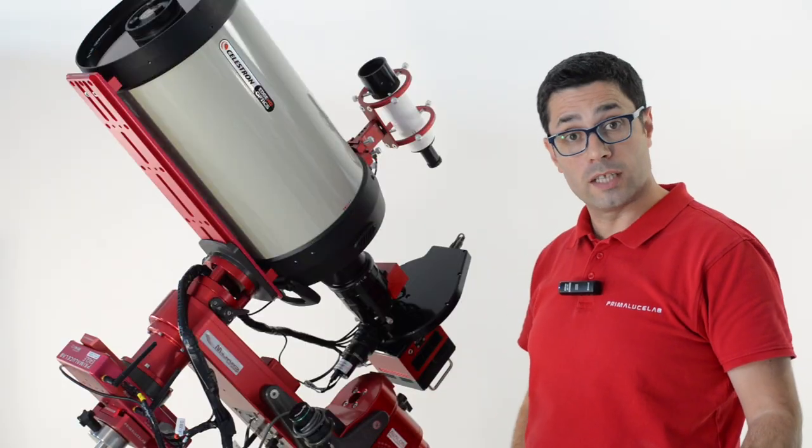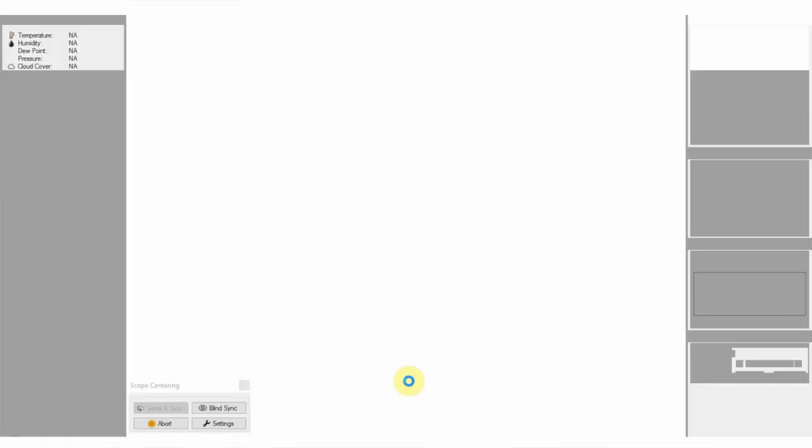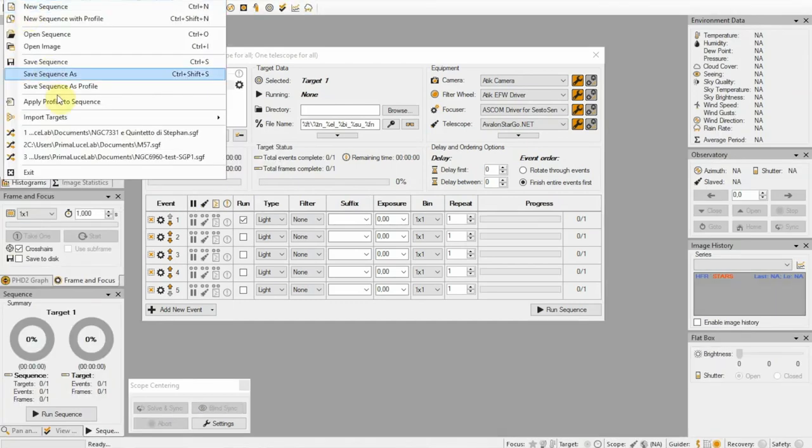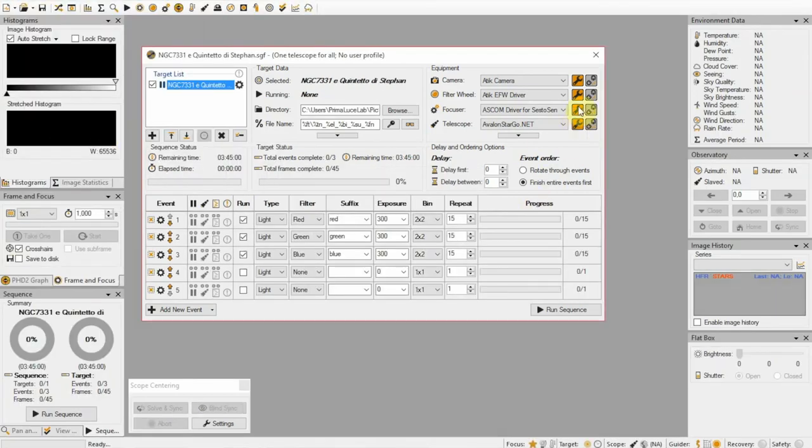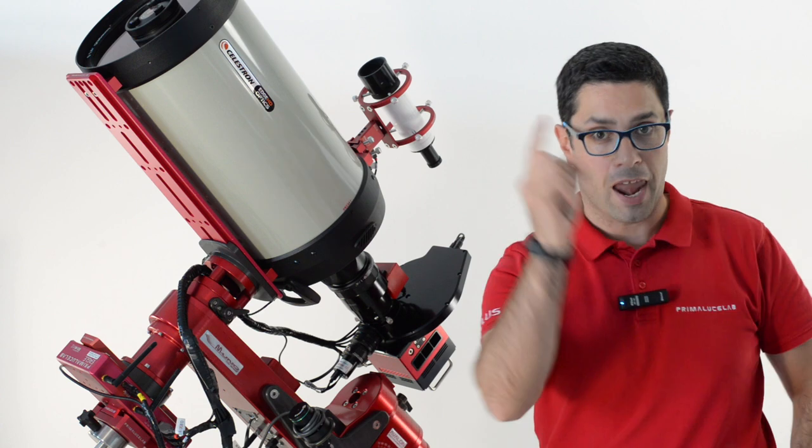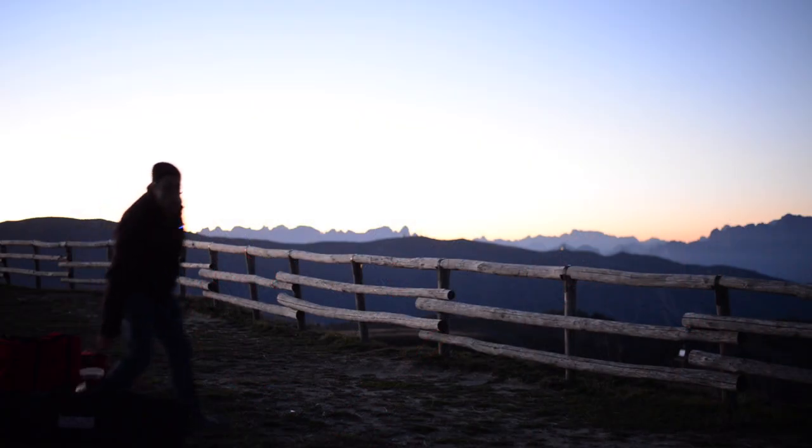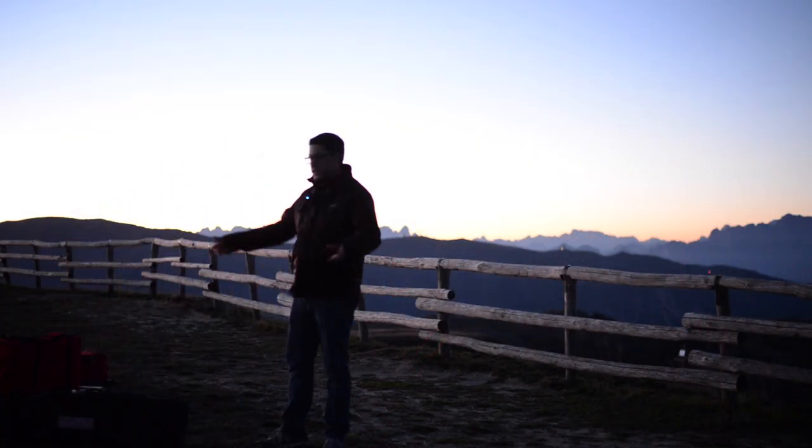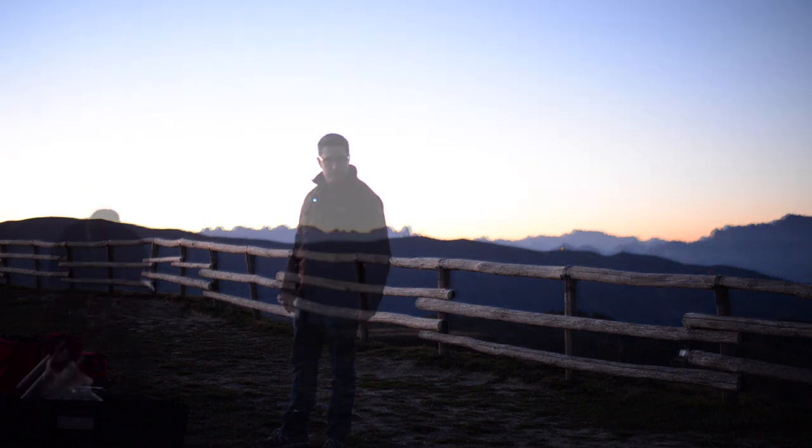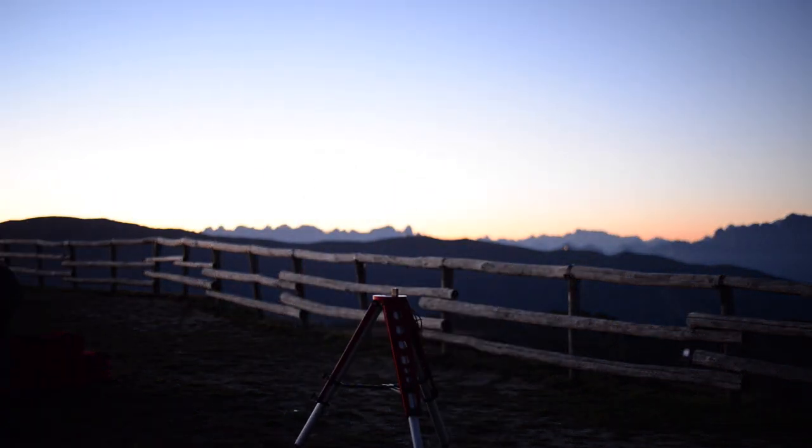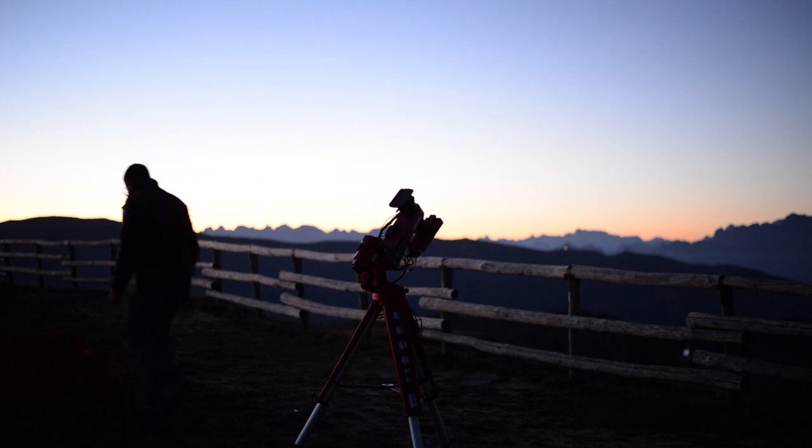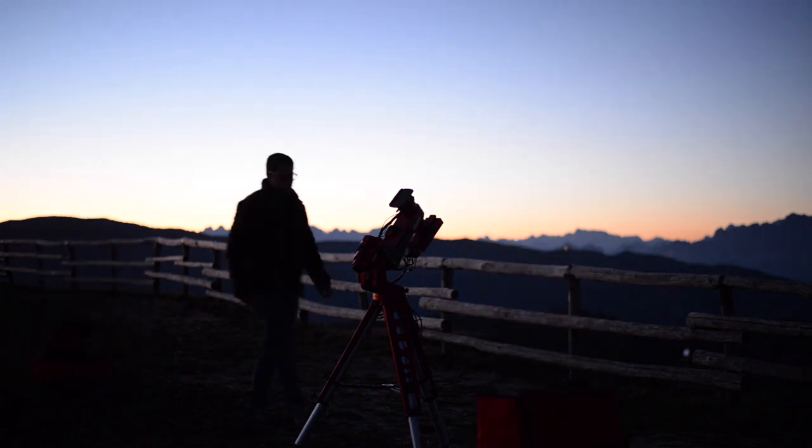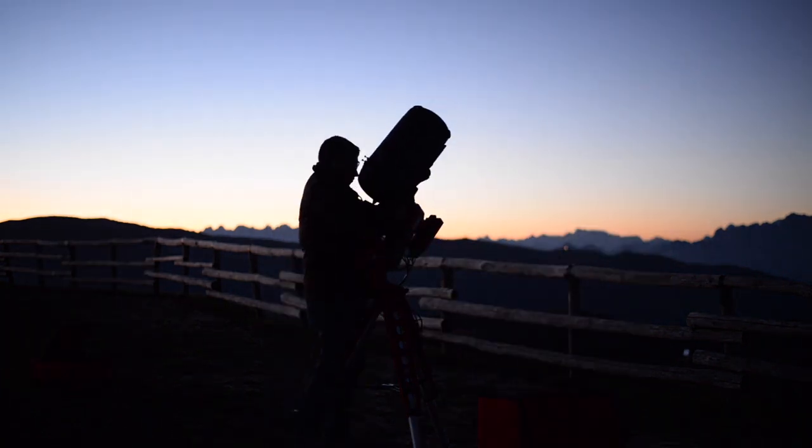We installed the Sequence Generator Pro in our EAGLE, we created an automated acquisition sequence, the telescope is ready, let's go imaging! We are in the field, so let's start and prepare our telescope. Thanks to the EAGLE, transporting and installing the telescope is simpler, because all the cables and different accessories are already installed.